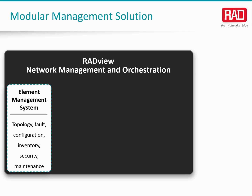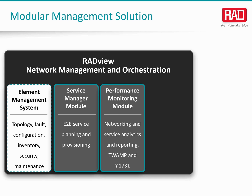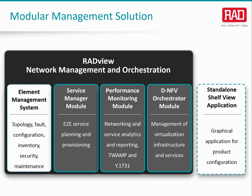As a modular management suite, RadView provides all required functionality via four modules: EMS or Element Management System to control the network at the device level featuring full FCAPS support; Service Manager to plan and provision Ethernet services such as E-Line, E-LAN, E-Tree, and E-Access, as well as TDM services; Performance Monitoring Portal to test, collect, and present key performance indicators for Layer 2 and Layer 3 services, including monthly and real-time reporting; and the DNFE Orchestrator, which handles all aspects of network functions virtualization. In addition, Rad offers a standalone shelf view application, a local craft terminal, and a graphical application for on-site technicians.